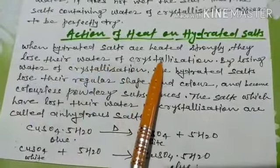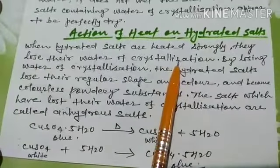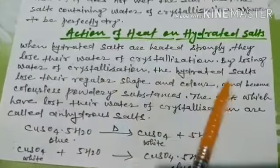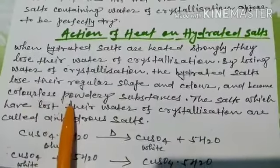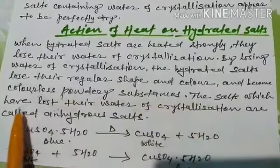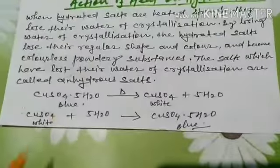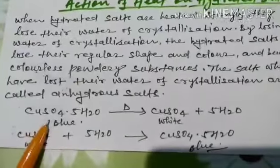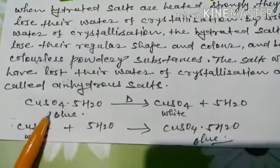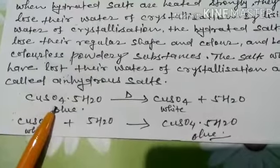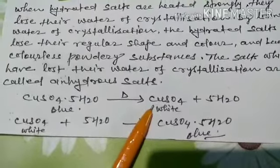Action of heat on hydrated salts: when hydrated salts are heated strongly, they lose their water of crystallization. By losing water of crystallization, the hydrated salts lose their regular shape and color and become colorless powdery substances. These salts which have lost their water of crystallization are called anhydrous salts. For example, hydrated copper sulphate is blue in color; when heated, it forms a white powdery anhydrous copper sulphate.